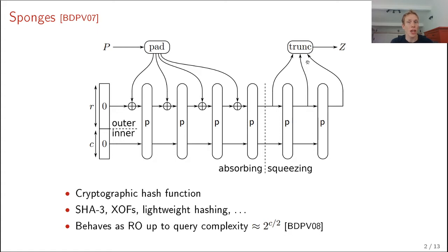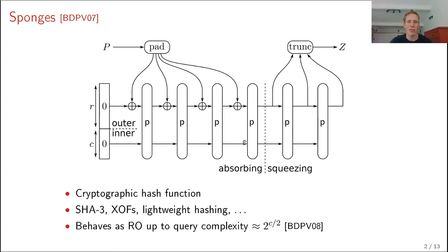In 2008, Bertoni et al. proved that if p is assumed to be an ideal permutation, then the sponge behaves like a random oracle up to around 2 to the c/2 queries. The c/2 bound basically comes from the birthday paradox on the inner part of the state, because if the attacker ever finds a collision in the inner part, this collision can be used to break the construction.